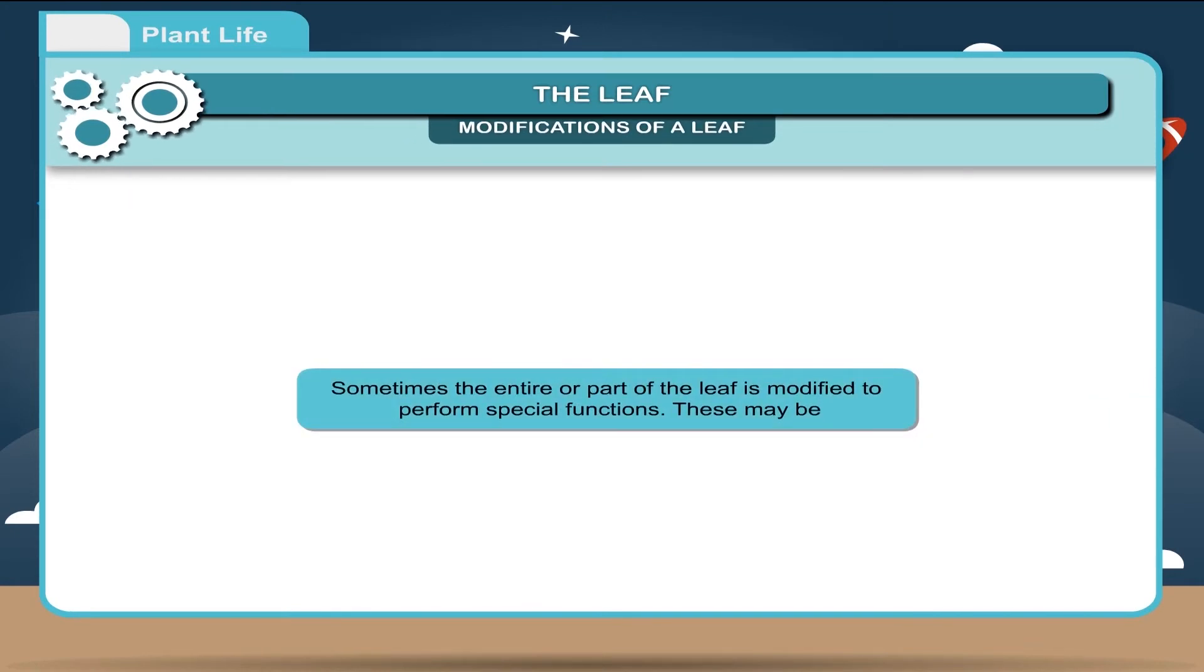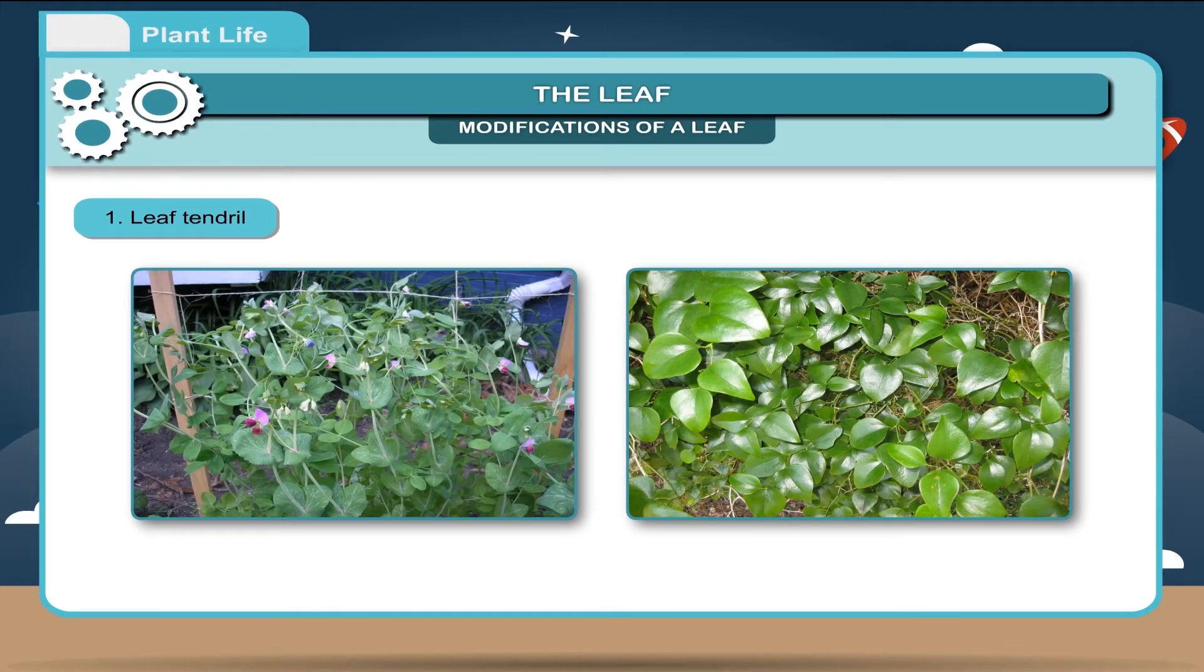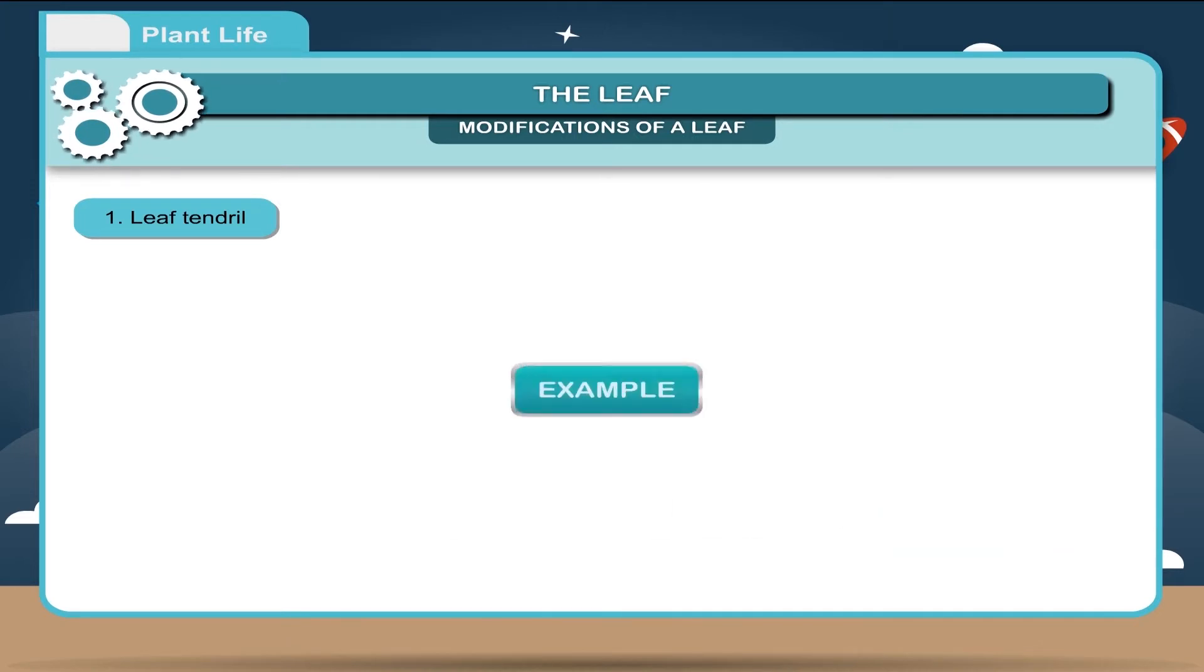Modifications of a leaf. Sometimes, the entire or part of the leaf is modified to perform special functions. Leaf tendril. In some weak stemmed plants, the leaf is modified into a tendril, which helps the plant in climbing. Example, sweet pea.